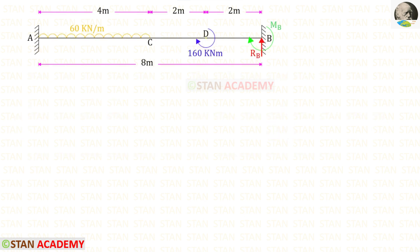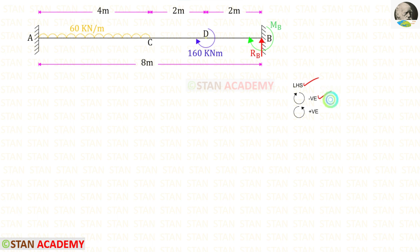From point B, we are going to find the moments about point A and we are going to draw the bending moment diagram. We have to use the left hand side rule: clockwise will be negative and anticlockwise will be positive.